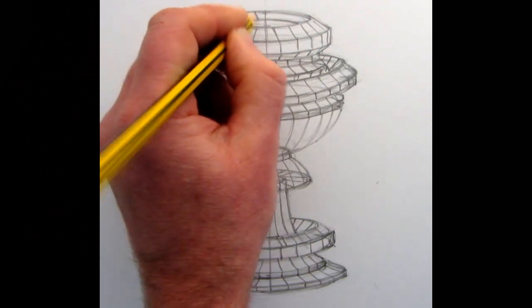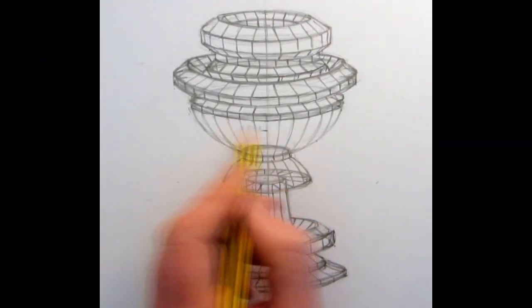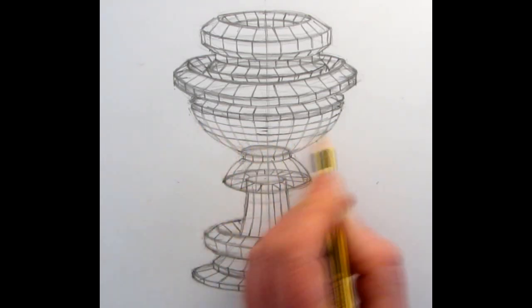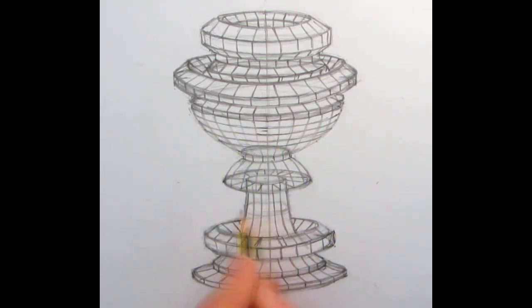And then the lines which are horizontal also have that sense of matching all the previous earlier elliptical lines that we drew at the earlier stage.